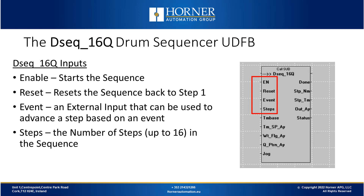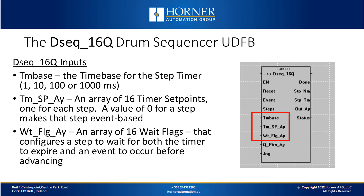The next input called 'steps' is an integer where you simply set the maximum number of steps in your sequence, up to a maximum of 16. Next is timing: the time-based input is an integer that tells the drum sequencer what the time base is for its master step timer. The master timer built into the UDFB requires a time base of either 1 millisecond, 10 milliseconds, 100 milliseconds, or 1 second, and the time-based variable tells the drum sequencer which to use.